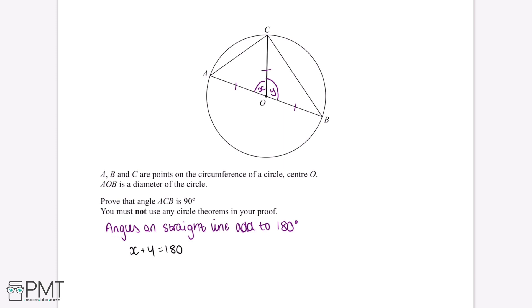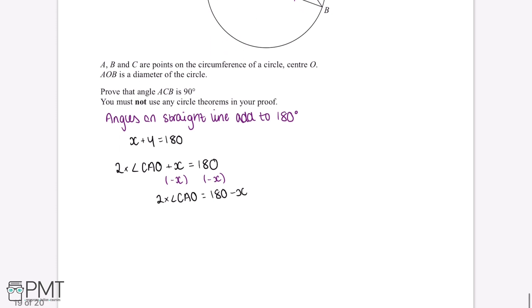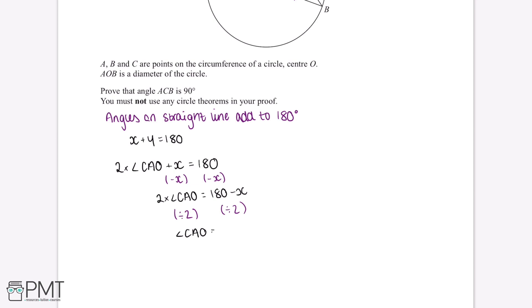If we start with angle CAO, because this is an isosceles triangle, angle CAO is equal in size to angle ACO. This means that 2 multiplied by angle CAO plus X is equal to 180 degrees. If we divide both sides by 2, this gives us that 2 multiplied by angle CAO is equal to 180 minus X degrees. Dividing both sides by 2 again gives us that angle CAO is equal to 180 minus X divided by 2 degrees.